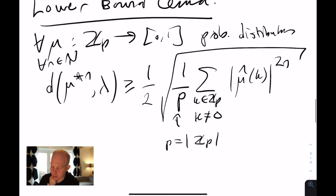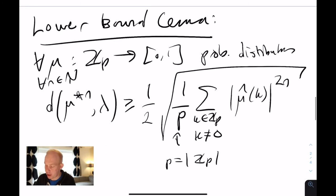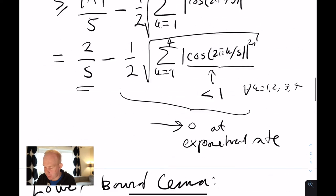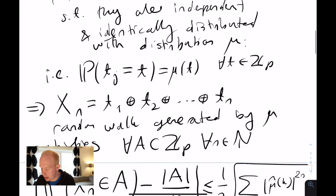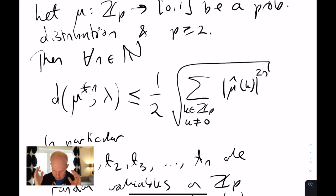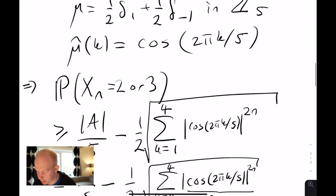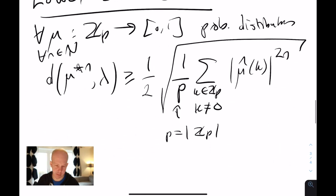The proof of the lower bound lemma is a good exercise using ideas similar to those in the upper bound lemma. Together, these two lemmas show that the rate obtained in the upper bound lemma is essentially sharp, except for an error term coming from the size of the group. For small groups, you get very sharp rates; for large groups, the bound may be a bit weaker.